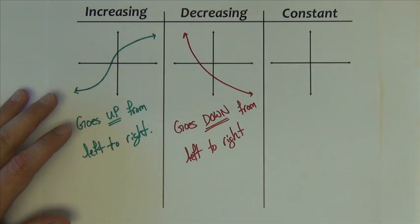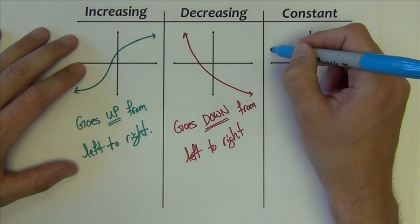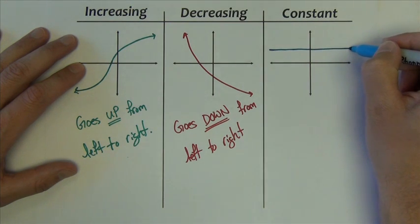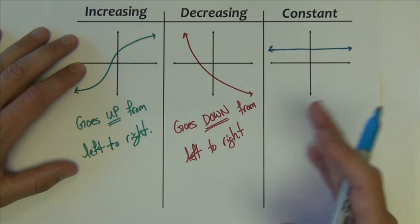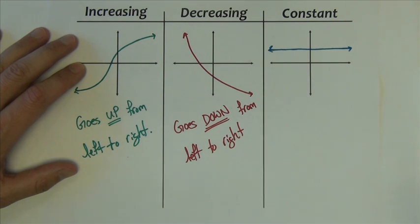A constant function, on the other hand, is one that does neither up or down behavior. It might just look like this. So neither increases or decreases. Doesn't go up, doesn't go down, just goes straight across level.